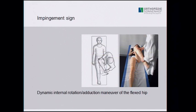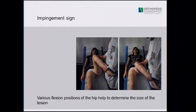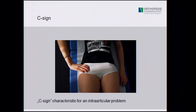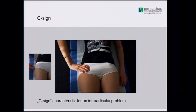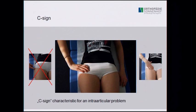The impingement sign is a dynamic test — not just the static flexion, adduction, and internal rotation. If you simply slide the hip over the anterior acetabular rim everyone will be painful, so you must do it dynamically using the weight of the leg to bring it into contact with the anterior rim. If this reproduces the patient's typical pain, it is a positive impingement sign. Typically the pain should be shown in a C-sign, indicating an intra-articular problem. If the patient points to the trochanteric region it may be bursitis; if to the groin, a psoas or adductor problem — not necessarily articular.